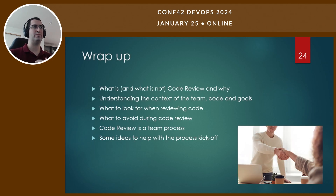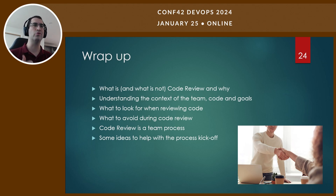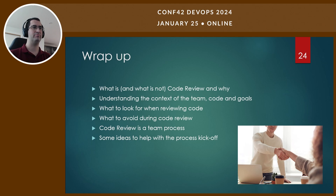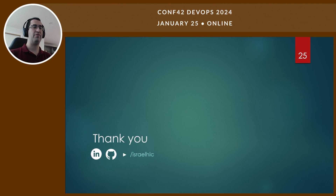To wrap up: we talked about what code review is and what it is not, and some reasons to do it. We looked at understanding the context of the team, the code, and the goals. We covered what to look for when reviewing code and what to avoid. We remembered that code review is a team process. And I shared some ideas to help kick off this process within a team. Thank you — feel free to ping me on LinkedIn. See you!